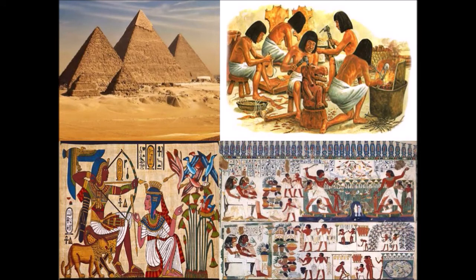Egyptian Civilization. The Egyptian civilization was one of the oldest civilizations. It is known for its monumental architecture, agriculture, art, science, and craft.